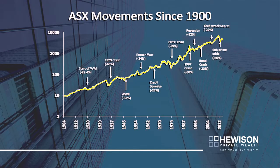To put the longer term into perspective, the graph on screen shows the Australian share market movements over the last 110 years. The general trend is up, notwithstanding some pretty significant drops along the way. But I put it to you that these short-term drops simply provide an opportunity for the long-term investor to take advantage of.